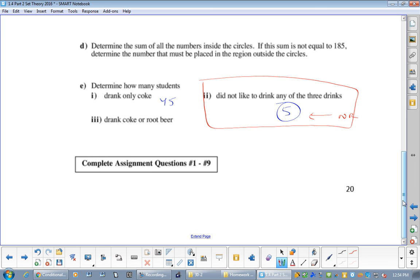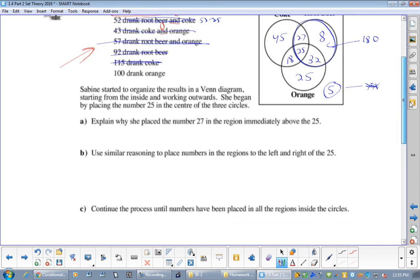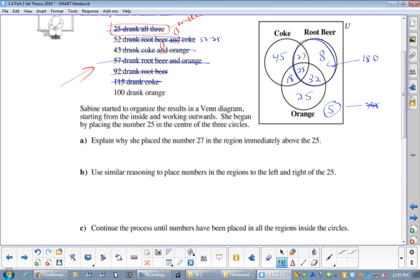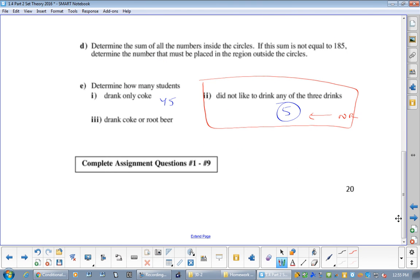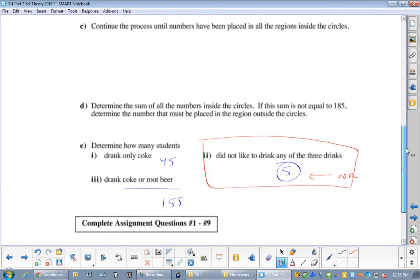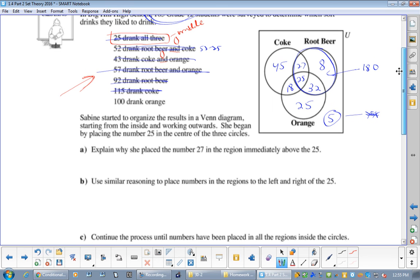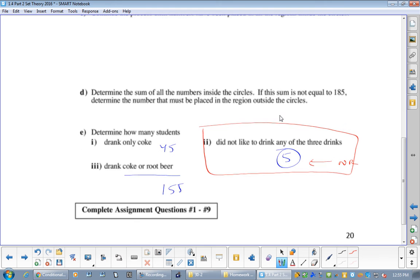How many people drank Coke or Root Beer? What are we saying? Yes, 155. So, basically, it's every number on there, except for the 25. We're just adding these up: 45, 27, 8, 32, 25, 18. But we're pretty good at those now, right?